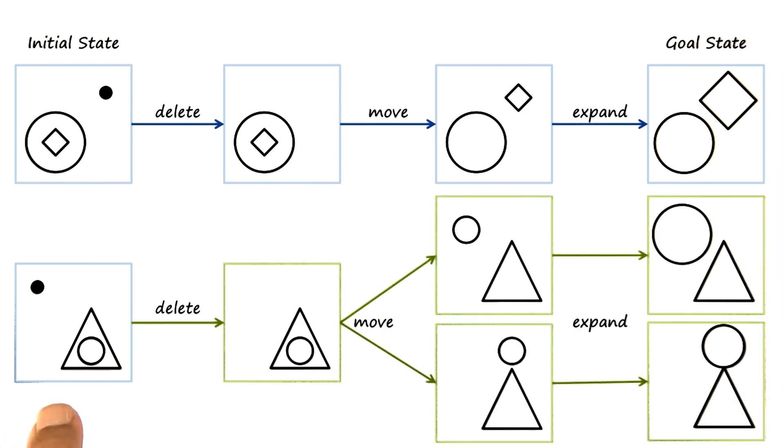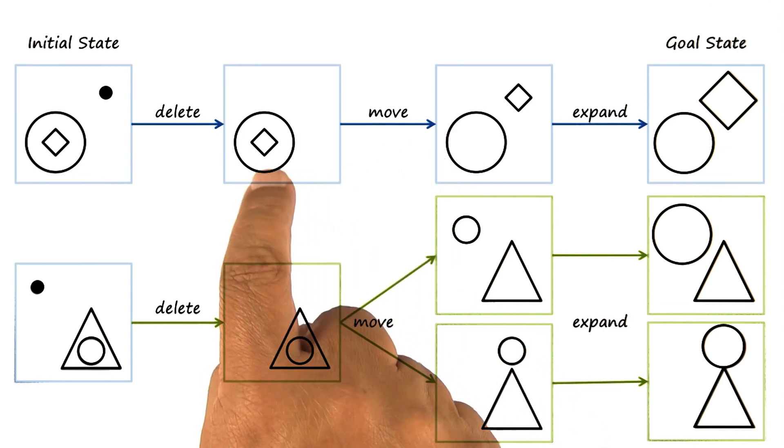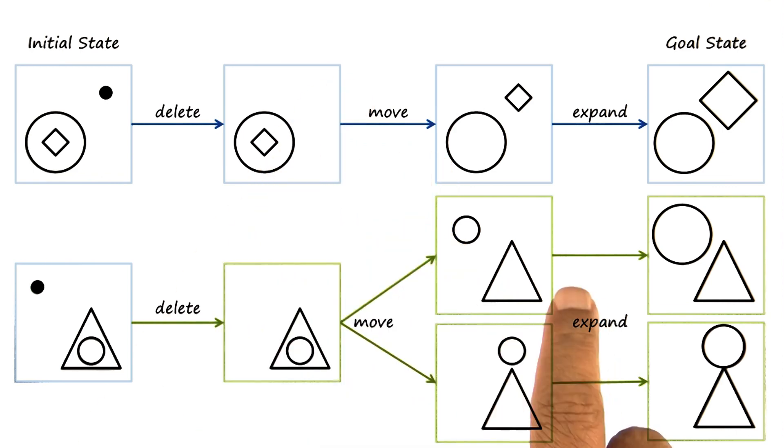We'll apply one transformation at a time. So we'll apply delete, we delete the dot. Now we apply move to this state, and that can give rise to several states. We have shown two here. Both of these states fulfill the requirements of this move operation of taking the diamond outside the circle.